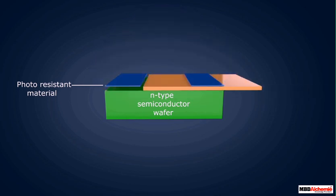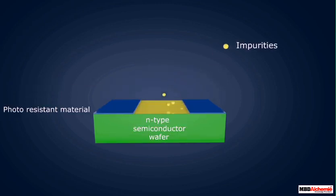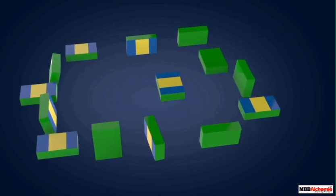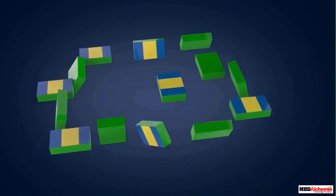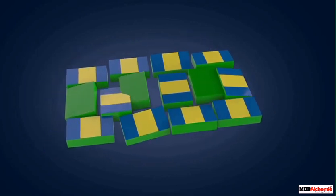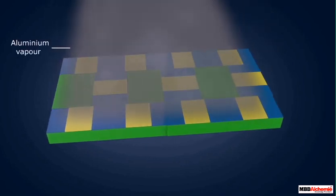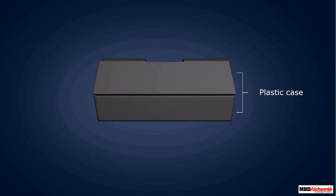Next, the silicon dioxide is removed with the help of the etching process. Lastly, the required impurities are added. This process is repeated to obtain different geometries required to complete the chip circuit design. The internal connection between the components is made by passing aluminium vapour. The chip is then enclosed in a protective plastic case.